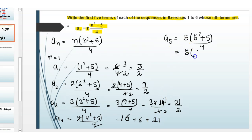The last one is a5: 5 times (5² = 25 plus 5)/4, which equals 5(30)/4, then 150/4 = 75/2.